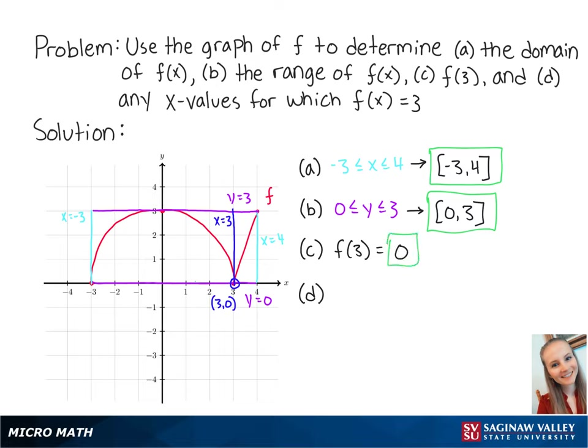For letter d, we want to find any x values for which f of x equals 3. Looking at the graph, we can see that when y is equal to 3, x is equal to 0 and 4. So the answer for letter d is x equals 0 and 4.